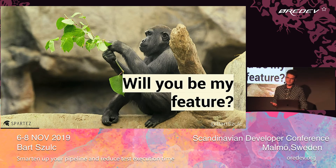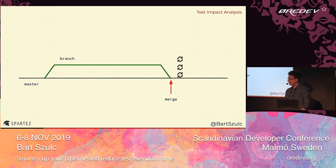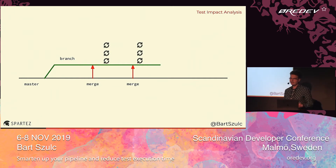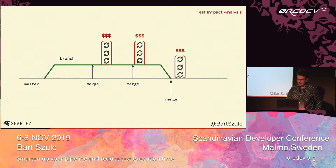That's just the story for master. Because we work in feature branch development, every time someone wants to implement something, they branch from master and start their own feature branch. Whenever we want to merge a feature branch to master, we go through this test execution cycle — and not only then, but also whenever something changes on the feature branch. So we're running those 45-minute cycles at least two or three times for feature branches, plus every time we merge to the mainline.